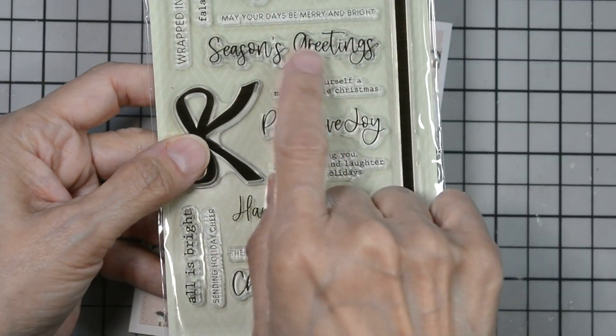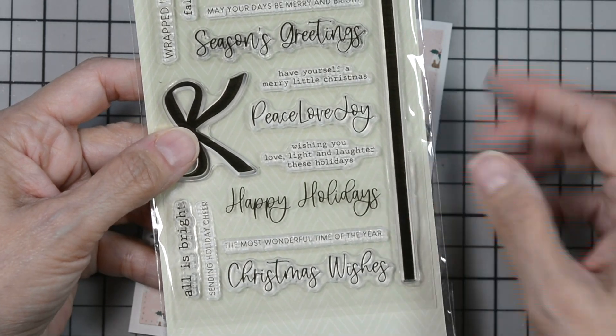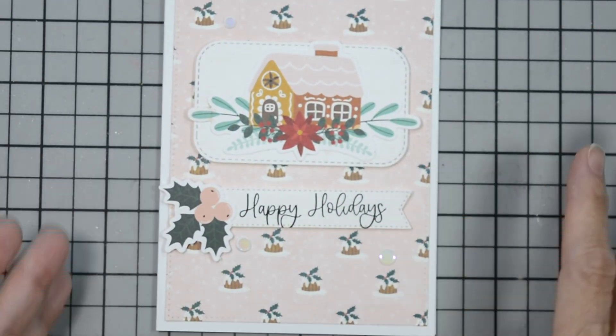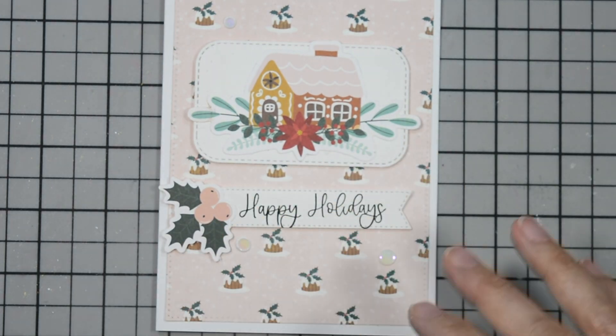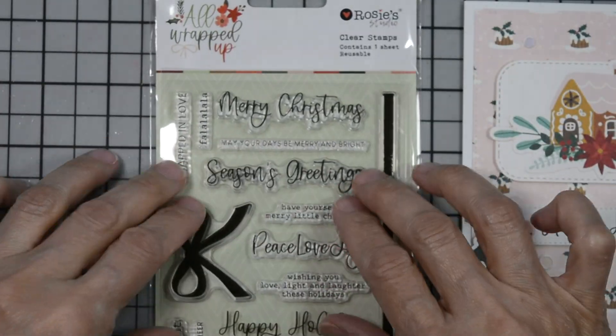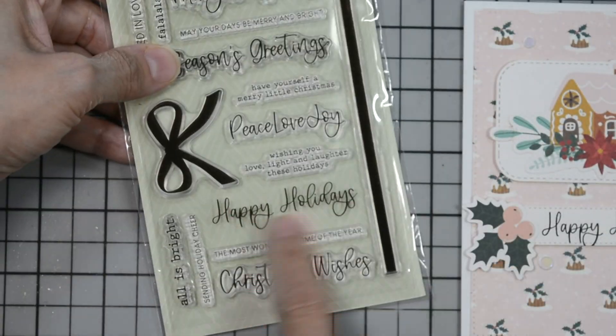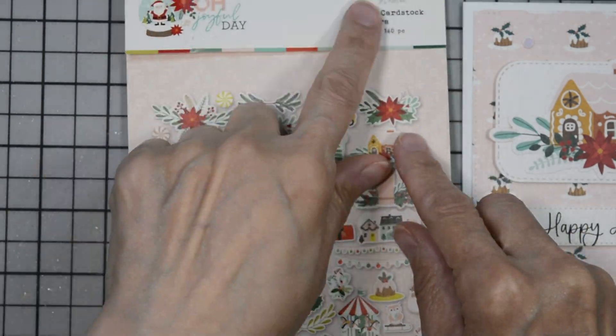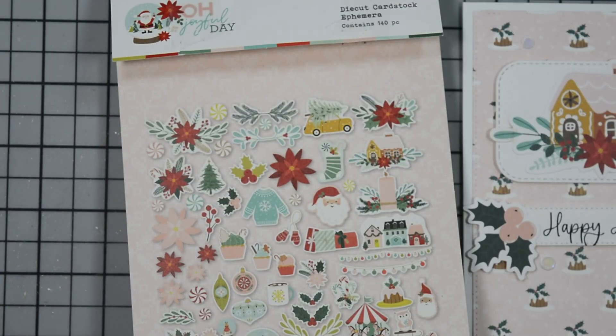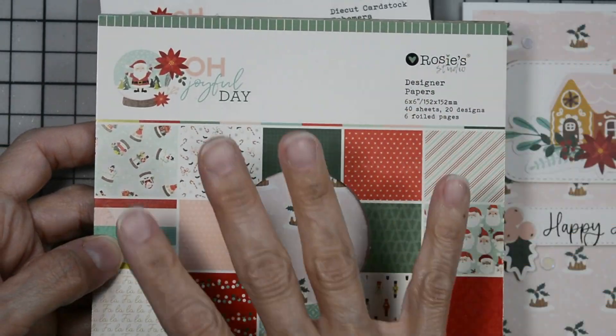Okay, and inside I will probably use one of these sub sentiments that are on this stamp set and place it inside. I'll do that off screen. I have to choose which one I want. So let's go over again what we use to create this. We use the All Wrapped Up stamp, this is the sentiment stamp. We use the Happy Holidays, the Oh Joyful Day ephemera pack, and the Oh Joyful Day 6x6 pattern paper.